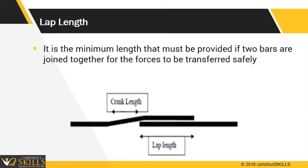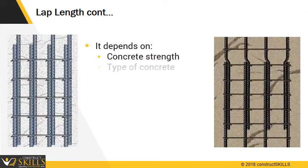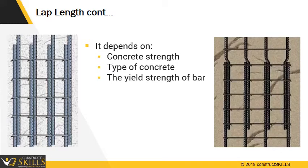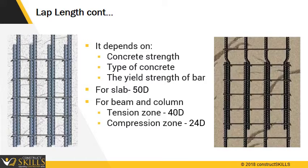Lap length is the minimum length that must be provided if two bars are joined together for the forces to be transferred. It mainly depends on the concrete strength, type of concrete, and the yield strength of the bar. Common lap lengths used are: for slab it is 50d; for beam and column, 40d if in tension zone and 24d if in compression zone. When two different diameters of bars have to be lapped, the lap length should be calculated based on the diameter of the smaller bar.